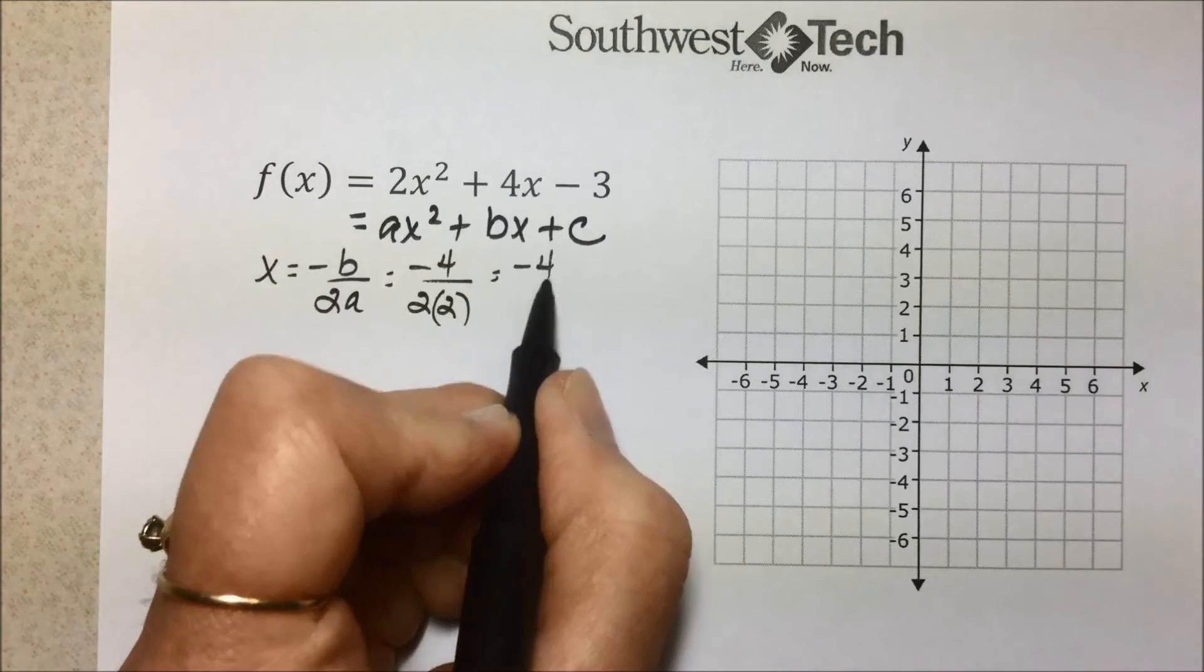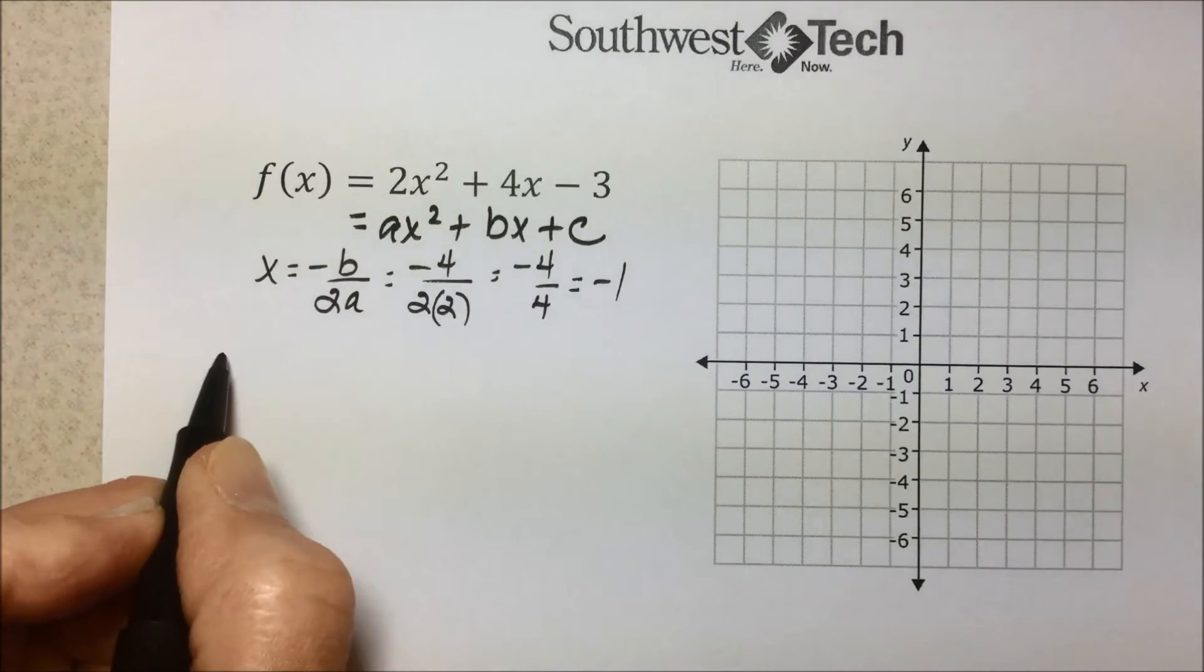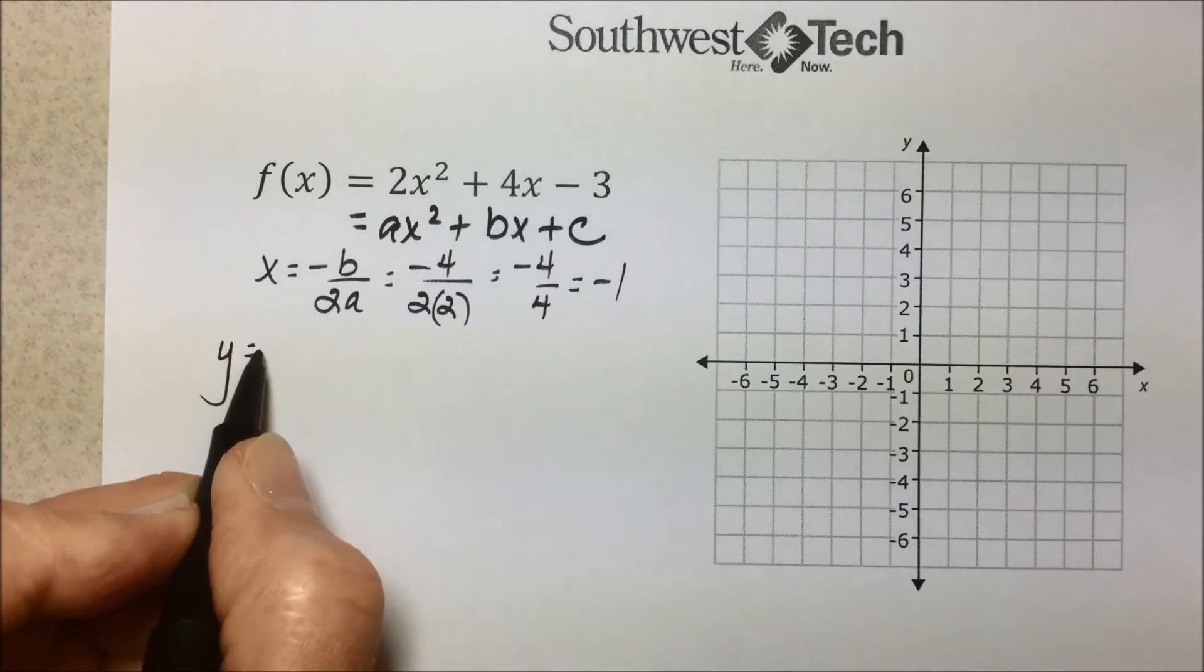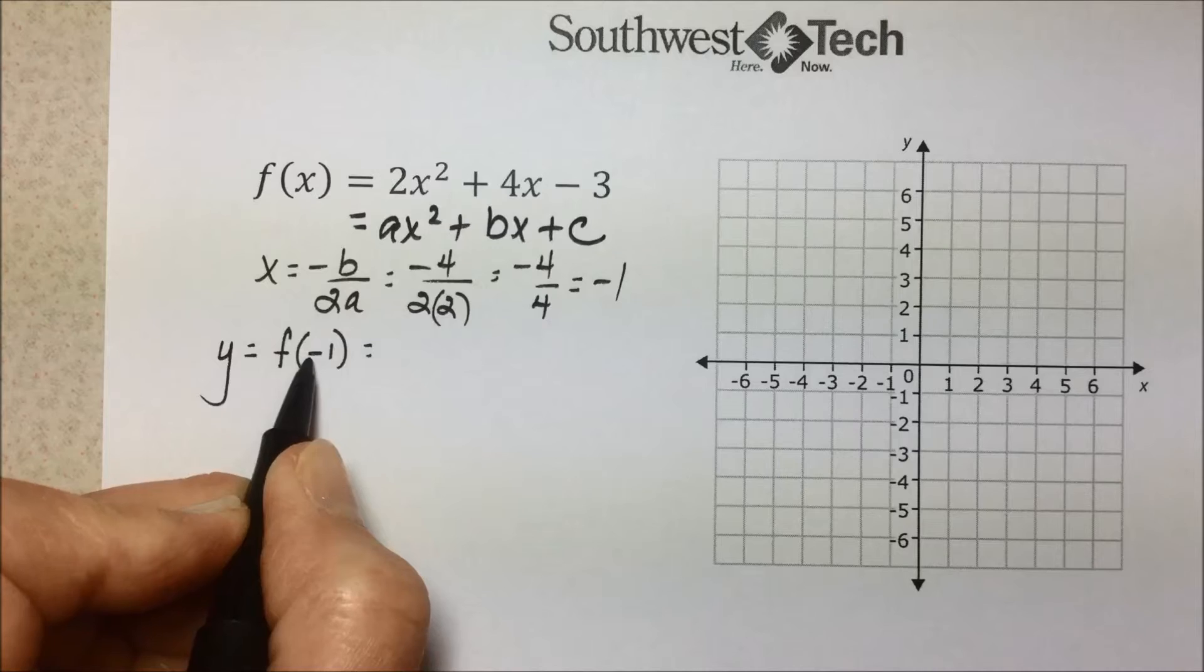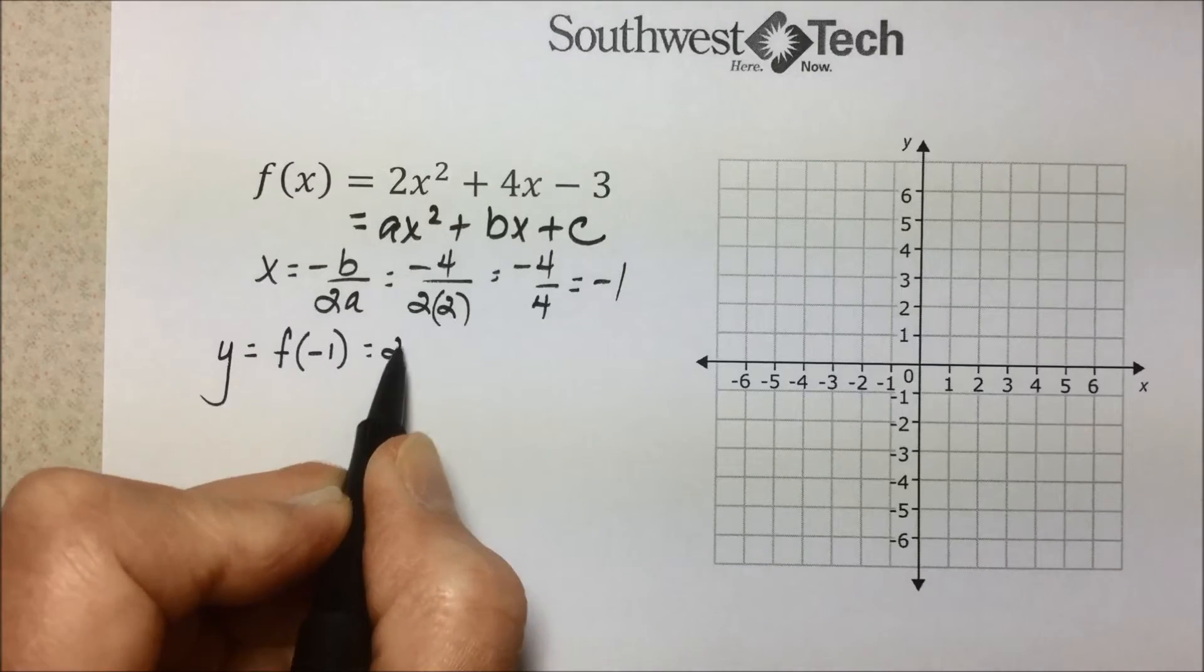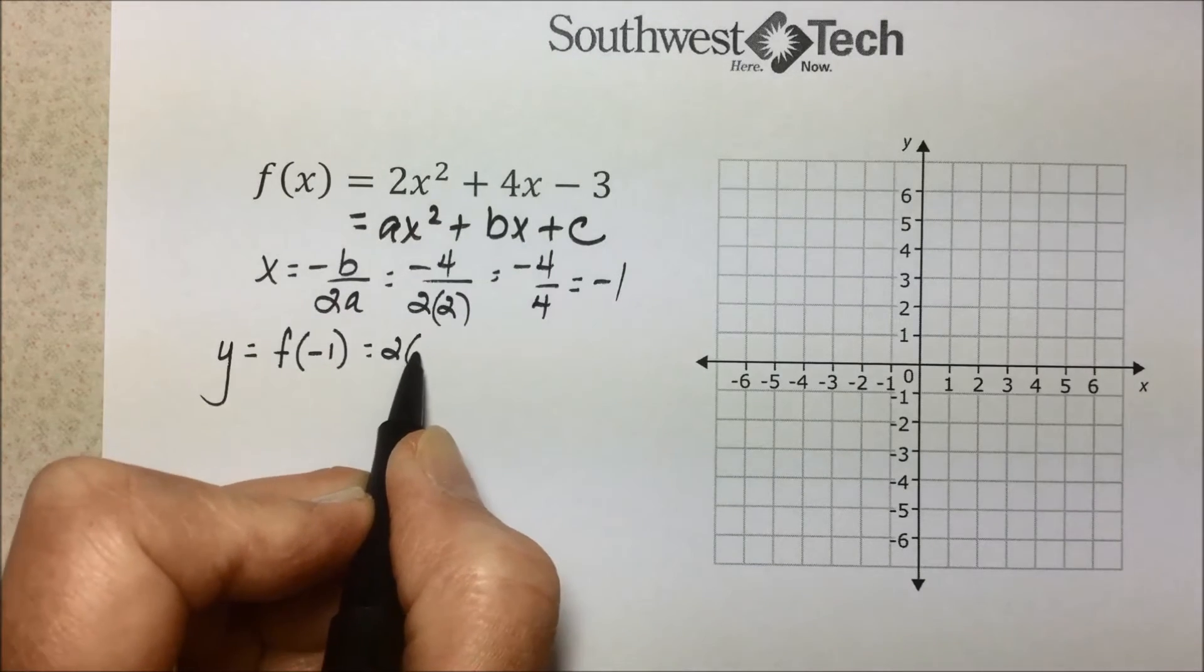We end up with -4/4, which is -1. To find the corresponding y, we will plug or replace x with -1 into our quadratic function.